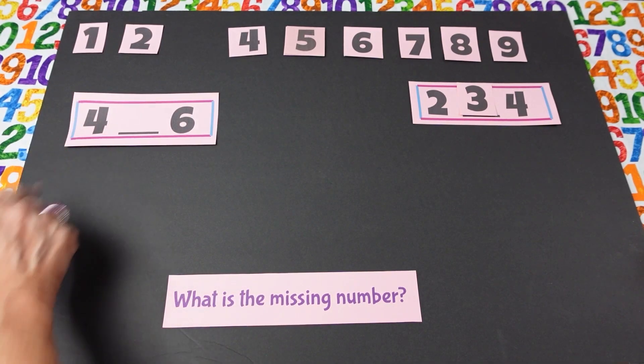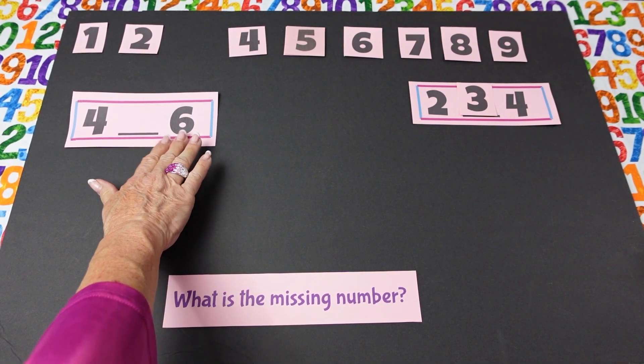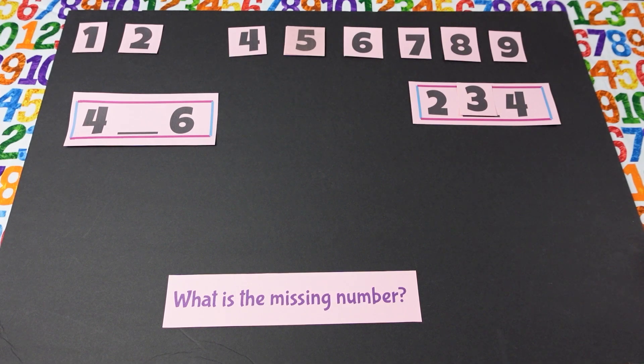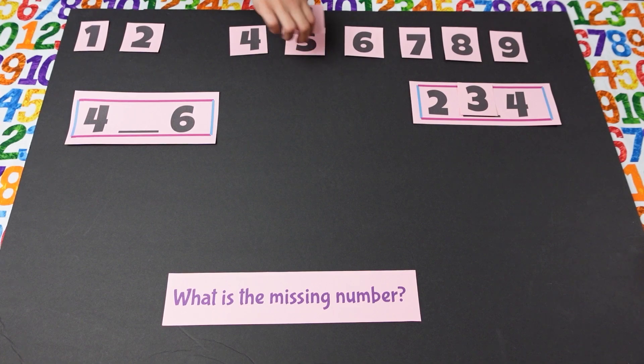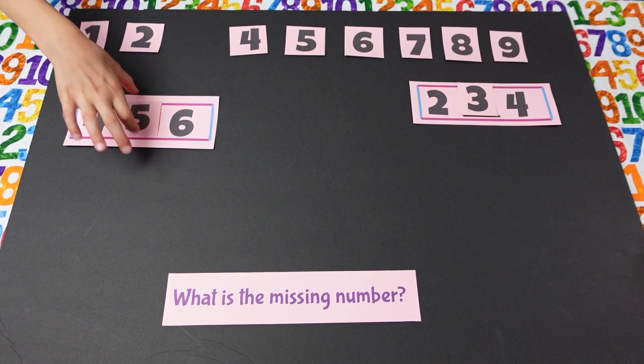Isabella, what is that number? Four. And what is this number? Six. Six. And what number is missing? Five. Five. There we go. Good job.